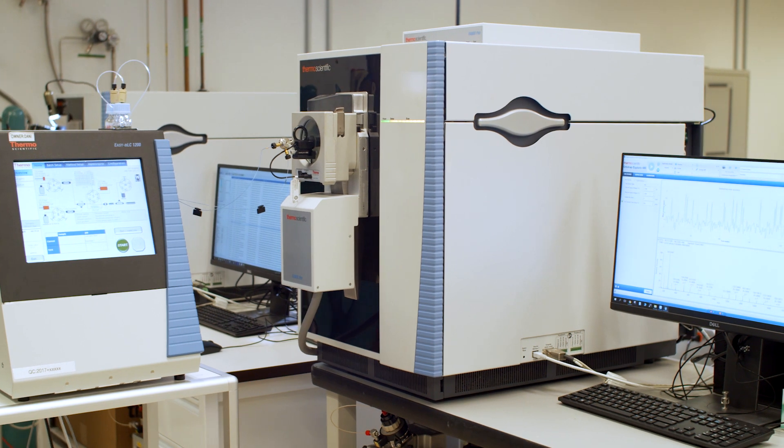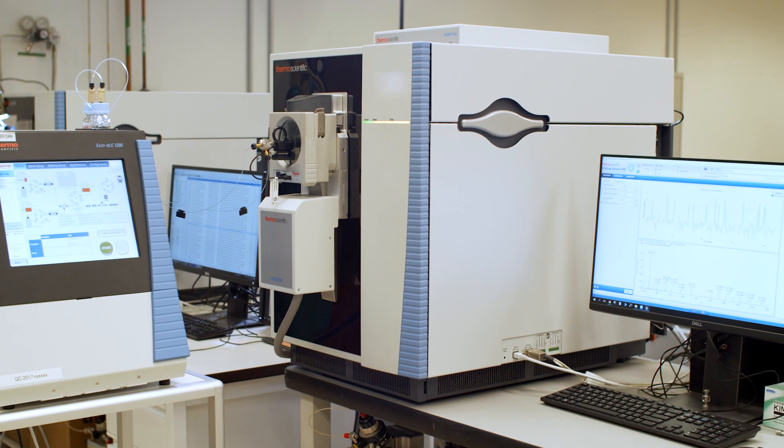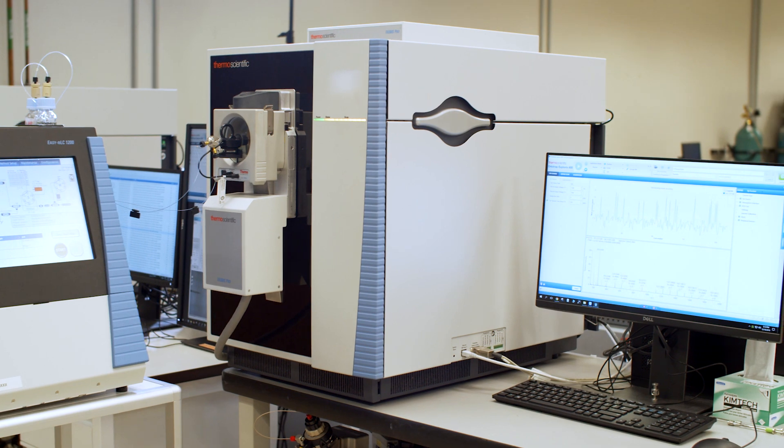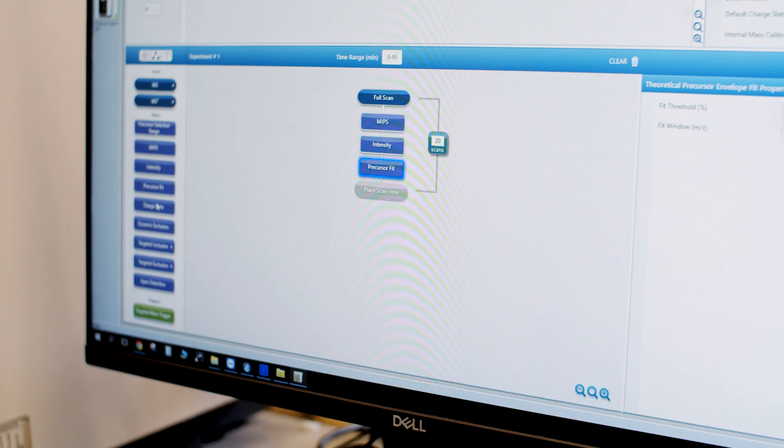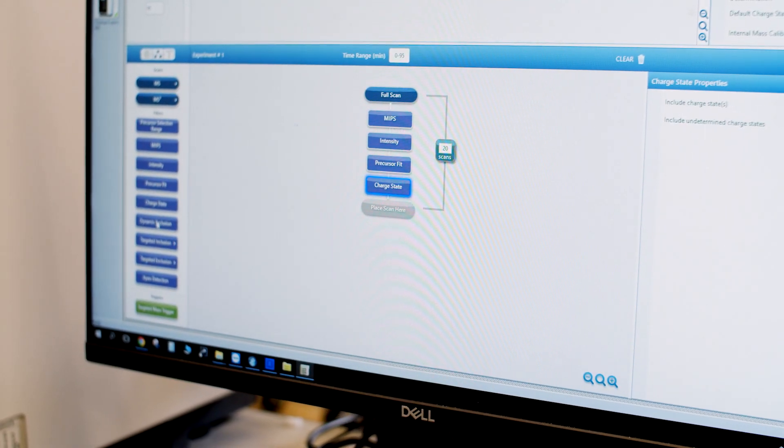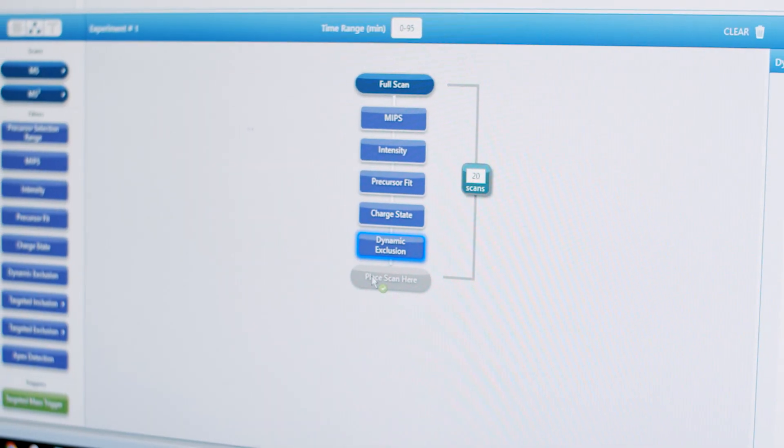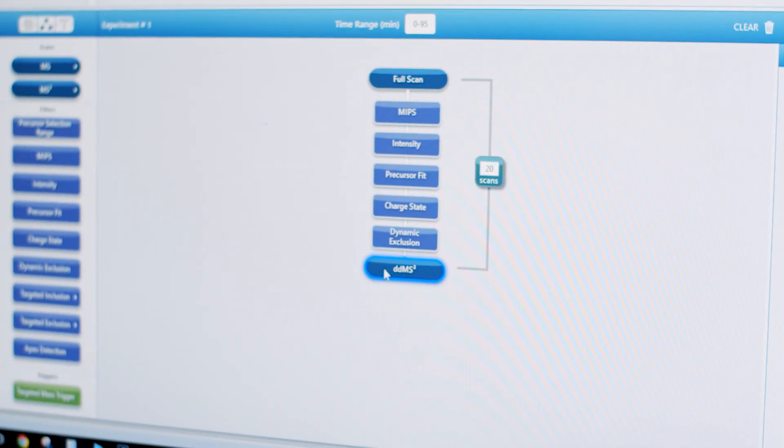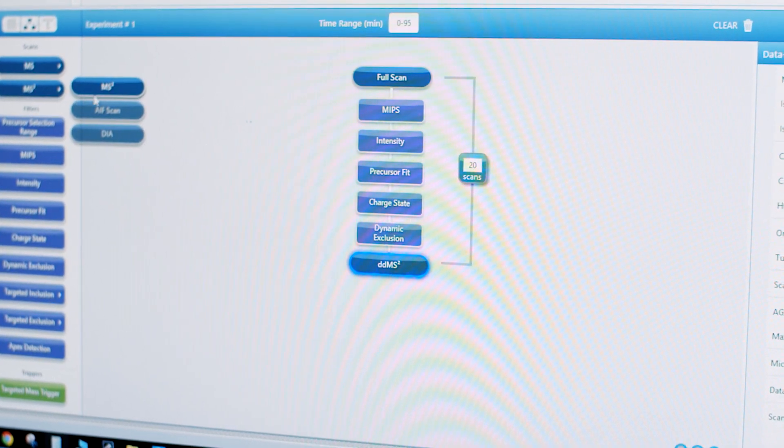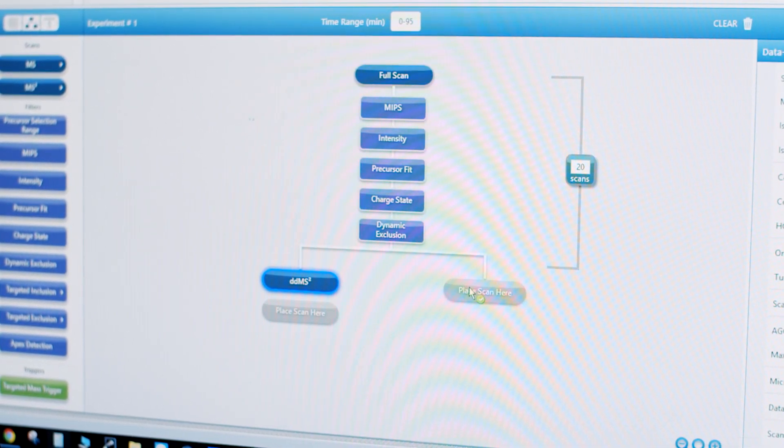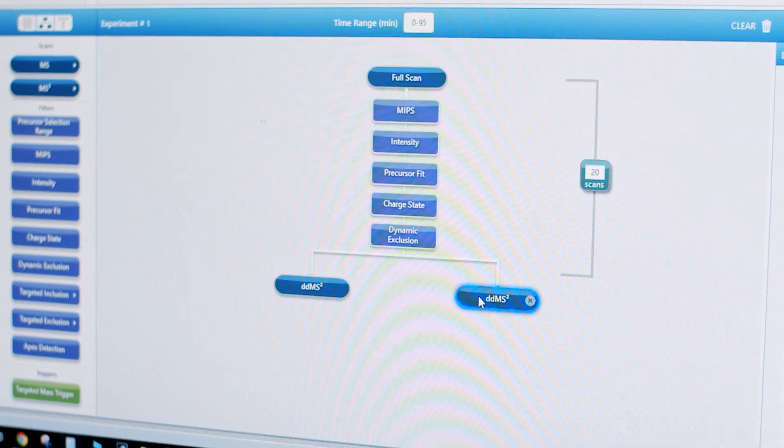With the introduction of the Thermo Scientific Orbitrap Exploris 480 Mass Spectrometer, we offer you game-changing performance with an unparalleled user experience. This out-of-the-box solution gives you access to a vast range of pre-set experiments and applications, customizable with simple drag-and-drop modifications to address your needs as a result of the next-generation unified architecture we've deployed across all of our latest platforms.